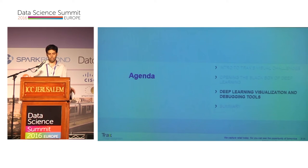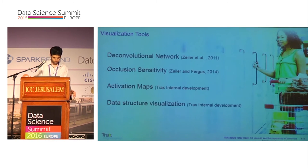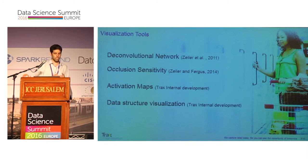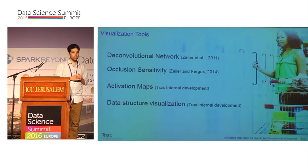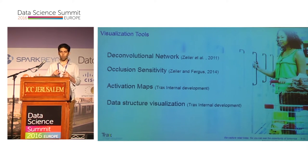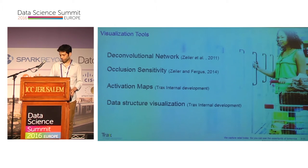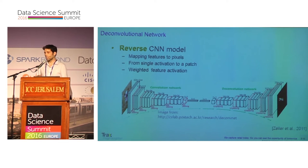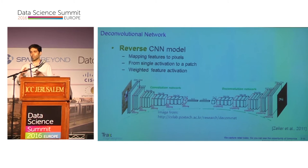We believe that understanding the model should suggest ways to make it better. I'm going to survey four different methods for model understanding. The first two are taken from a paper published by Zeiler et al. The third is a method we developed internally at TRAX. The fourth is more of a data visualization method, which I'll only talk about briefly. The first method is called Decon, and in this method we try to understand what the neurons see.